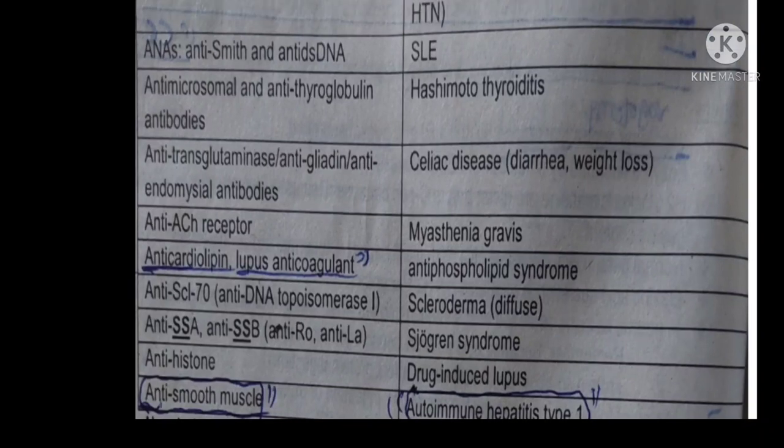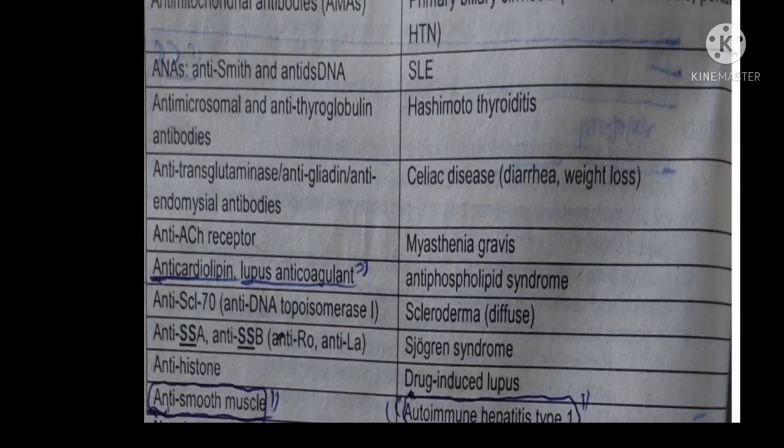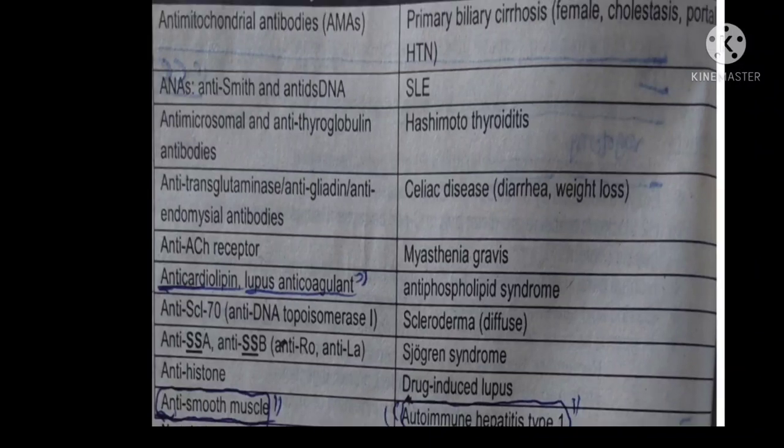Anti-SSA and anti-SSB, also called anti-Sjögren's syndrome A and anti-Sjögren's syndrome B antibodies — also known as anti-Ro and anti-La — are associated with Sjögren's syndrome. Anti-histone antibodies are diagnostic for drug-induced SLE.